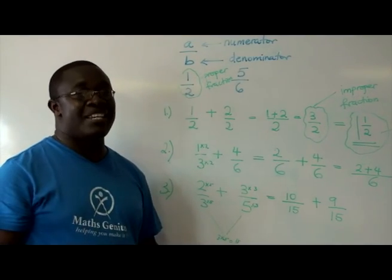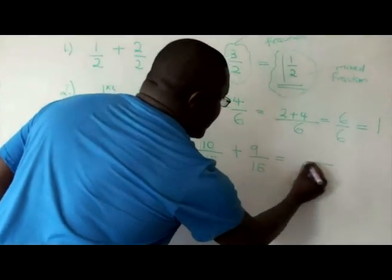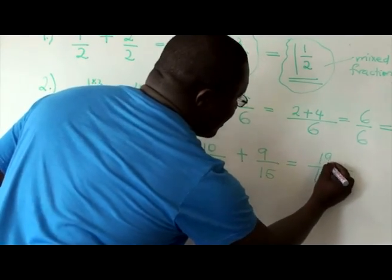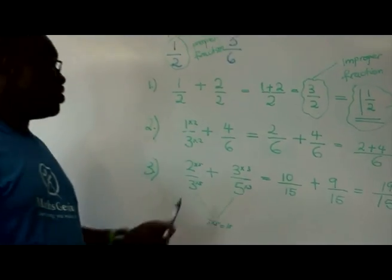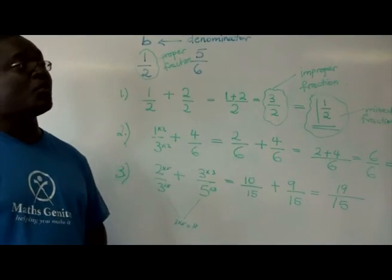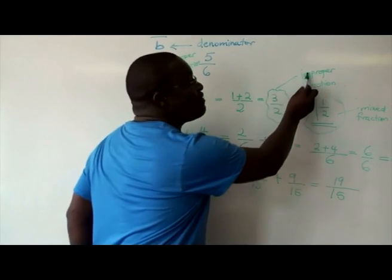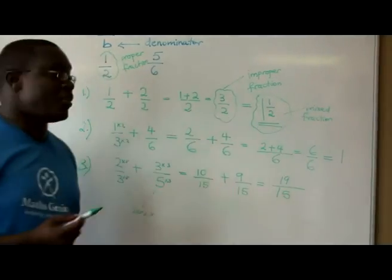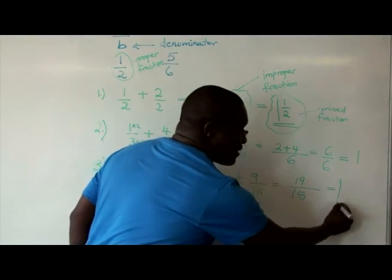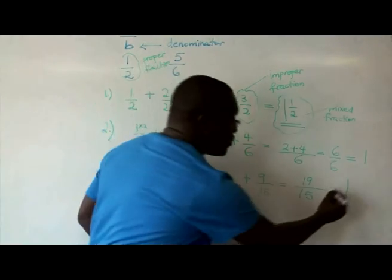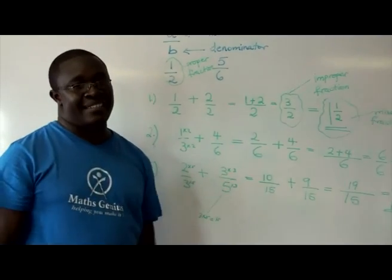Now it's an easy case of adding the numerators, which is going to be 10 plus 9, which is 19. So 19 over 15, that is the sum of 2 over 3 plus 3 over 5. Depending on how you've been asked to answer the question, are you supposed to leave it as an improper fraction or mixed fraction? In this case, how many times does 15 go into 19? It will be once. And what will be our remainder? 4 out of 15. So that would be our final mixed fraction answer.